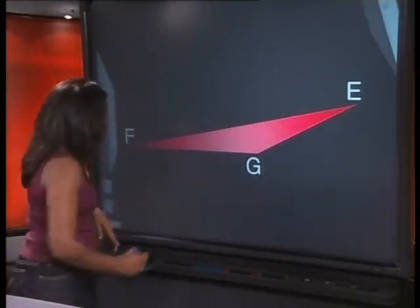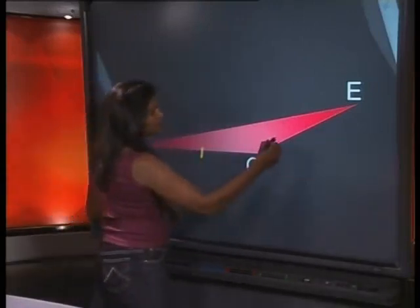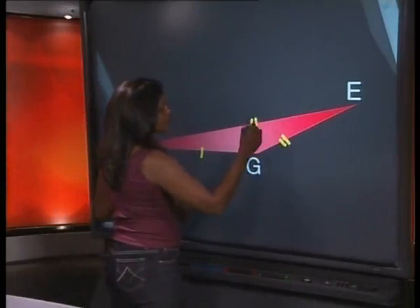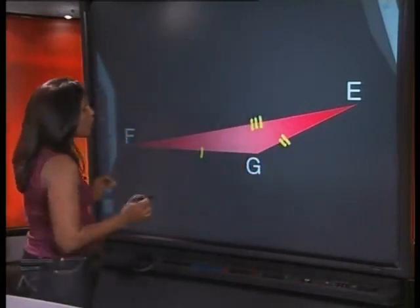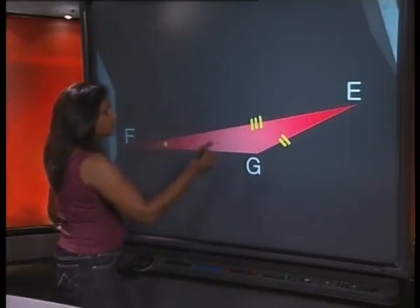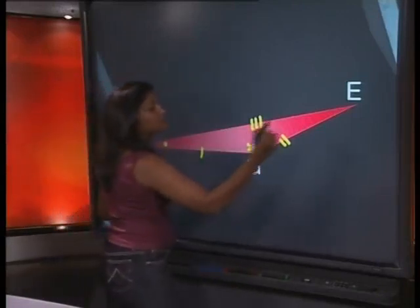Let's label each of the sides with a different marking because the triangle is scalene. We've got one, two strokes and three strokes. Now because this triangle is scalene, we can also label the angles with different symbols because they are all of different sizes.